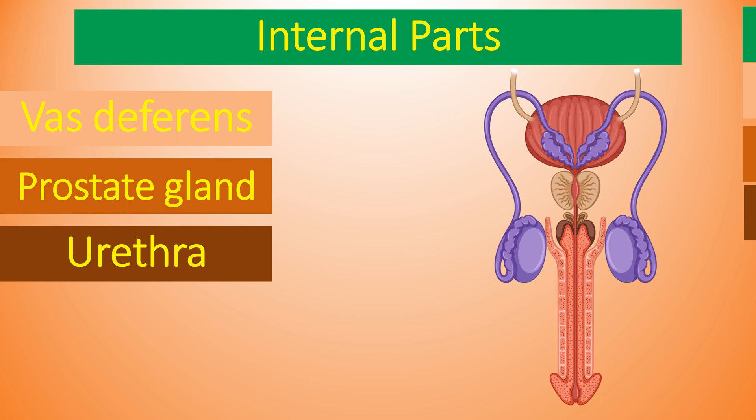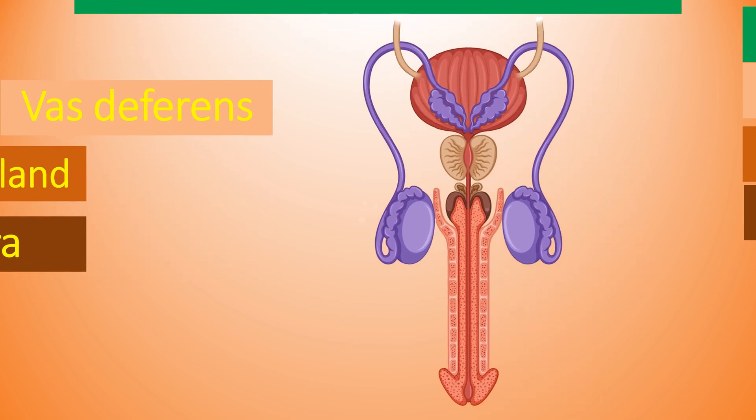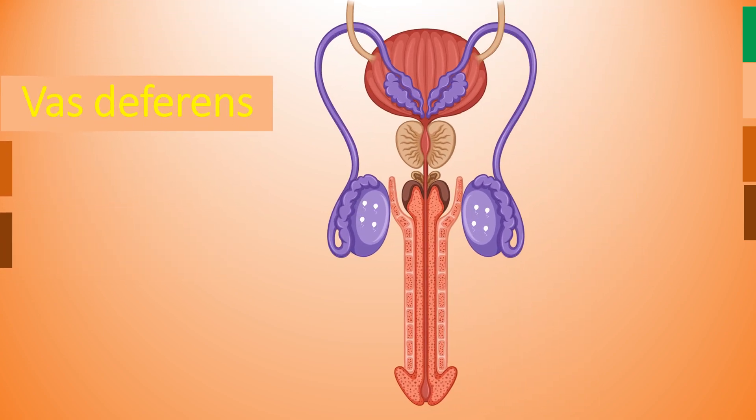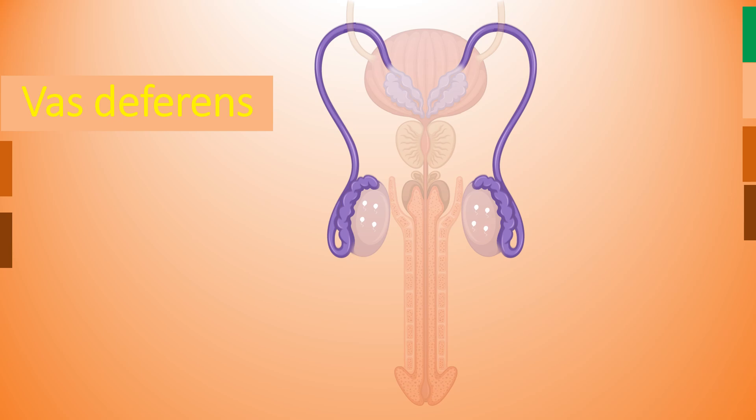Let's look in detail about vas deferens. Vas deferens is a muscular tube which passes upward and into the abdominal cavity. Its measurement is about 30 centimeters in length.